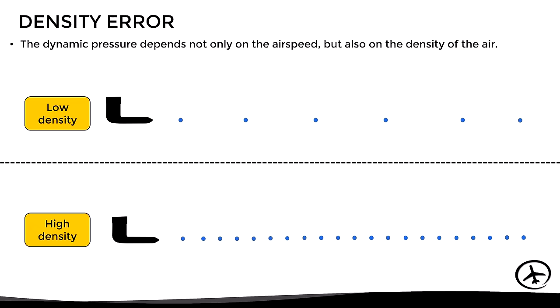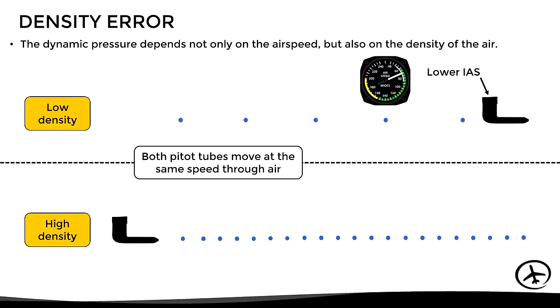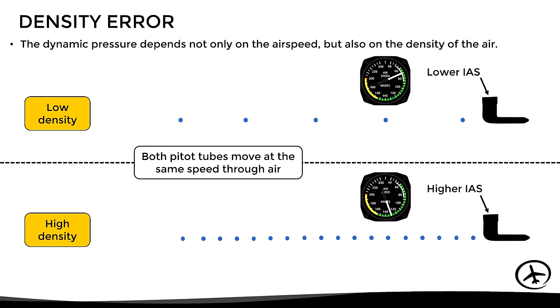Consider two pitot tubes: the one moving in lower-density air will have air particles farther apart, while the one in higher-density air will have particles closer together. The tube in less dense air captures fewer air particles, experiences lower dynamic pressure, and the airspeed indicator shows a lower indicated airspeed. The tube in denser air captures more particles, experiences higher dynamic pressure, and shows a higher indicated airspeed. Although both tubes move at the same speed, moving in different air densities results in different indicated airspeeds.